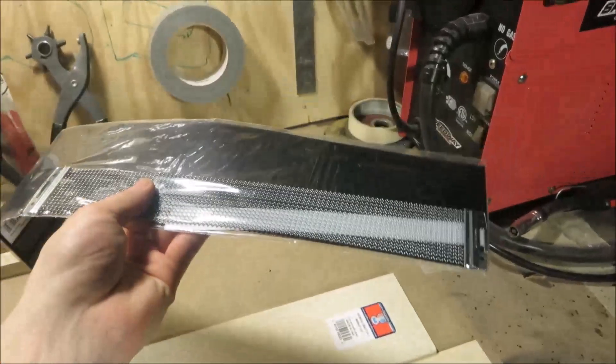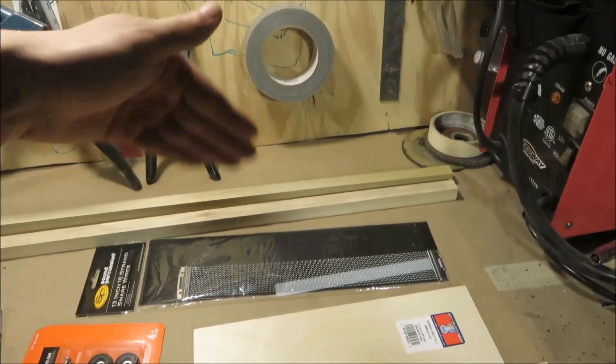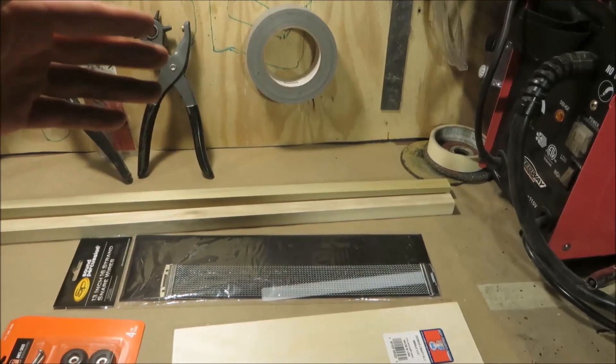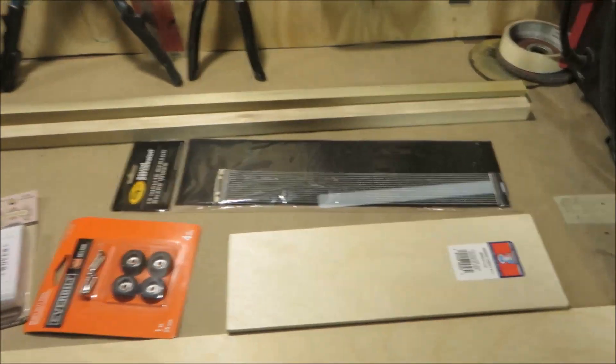And then lastly, we've got these 13 inch 16 strand snare wires. The snare wire is what you put on the bottom of a snare to set it apart from all the other drums. This will give our cajon when we hit it towards the top more of a psh, psh noise than a dung, dung, dung. And sorry to get all technical on you with my musical terminology.